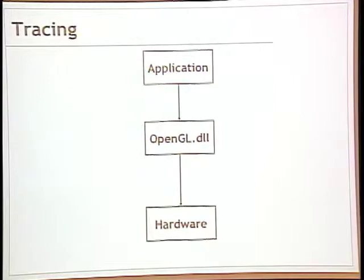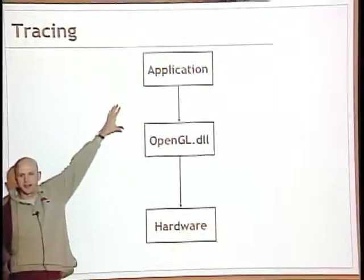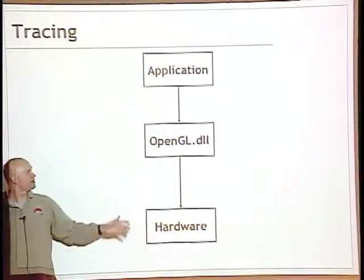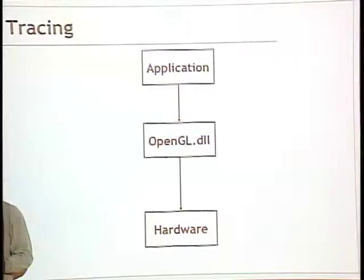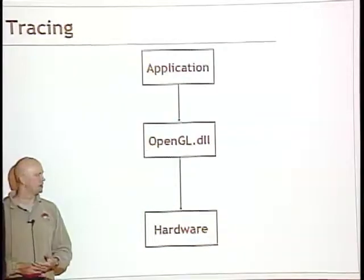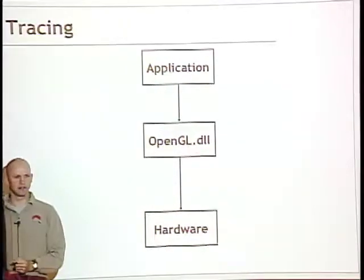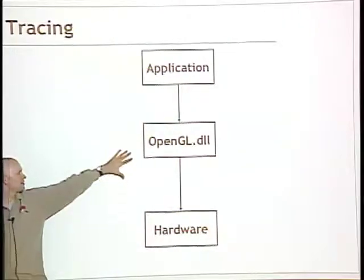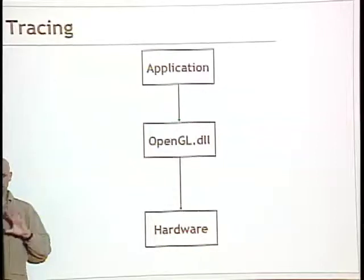The first thing we're going to talk about is tracing. We have an application up here — it's some sort of piece of software — and then we've got a piece of hardware down here. The question is how does the software talk to the hardware? This is done through a bunch of operating system magic. In the Windows version of the world, it's done through what we call a DLL, a dynamically linked library. These are .so or .libs on other kinds of architectures, and this contains OpenGL or DirectX kind of system code. It also contains what we call the driver.